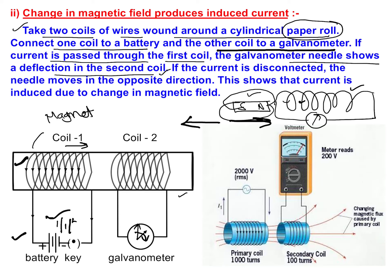If we change the direction of current, we will have the opposite deflection. If the current is disconnected, the needle moves in the opposite direction.